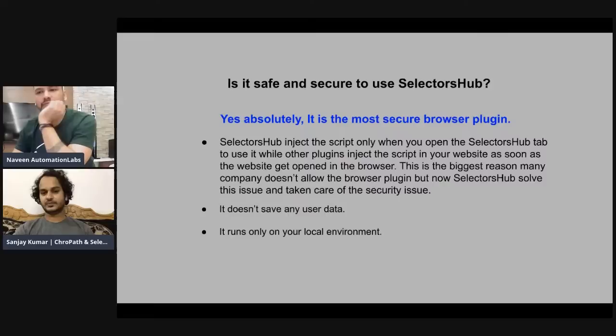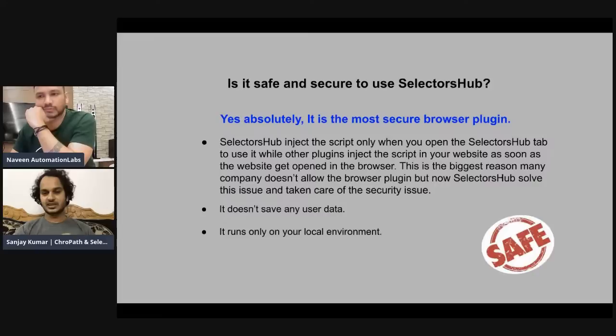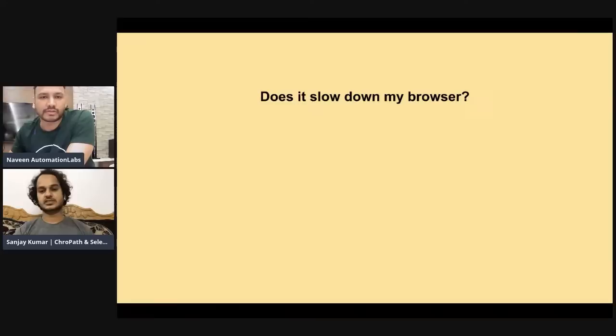Other extensions inject scripts into your website as soon as you open any page, whether you're using them or not. But with Selectors Hub it only interacts with your website when you open the tab. It doesn't save any user data — it has no server, nothing. It runs only on your local environment. It's absolutely safe to use and no license is required. For banking or finance companies with strict extension policies, you can show them the privacy policy and I can provide written confirmation that no data is saved or fetched.